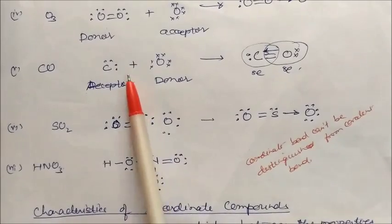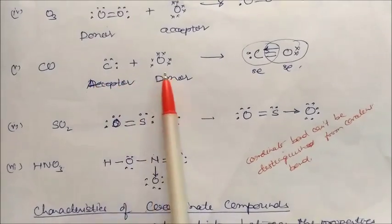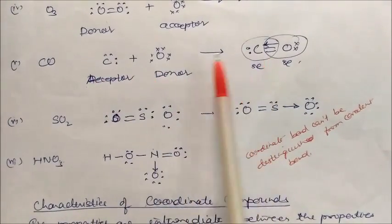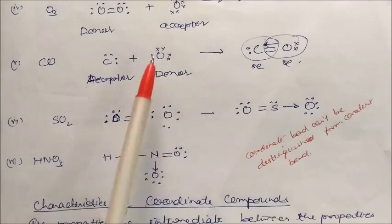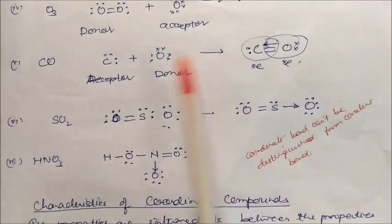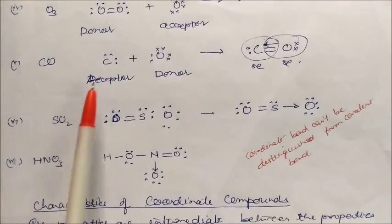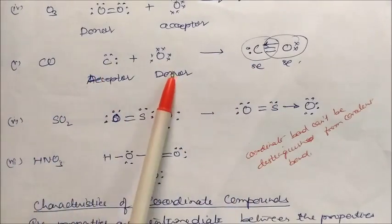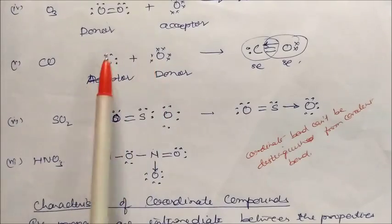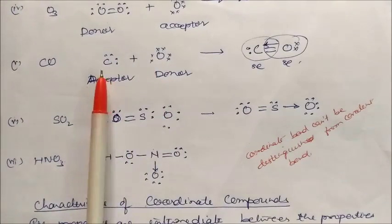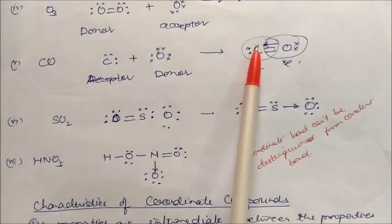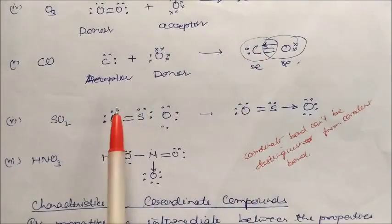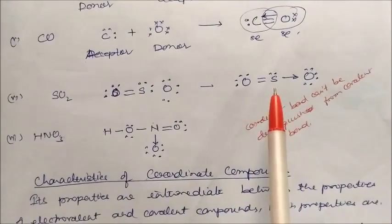In case of carbon monoxide, the covalency of carbon monoxide is three — you can see there is a triple bond. Carbon is the acceptor and oxygen is the donor, because oxygen is donating one electron pair to carbon. So the covalency of oxygen is three and the covalency of carbon is also three. Keep all this in mind.